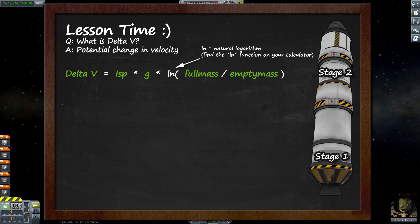Lesson time. Delta V is the potential velocity that you can gain based off the engines and the fuel that you have available to you in your stages. To calculate our delta V, we need the ISP of our engine, we need our gravity constant, and we need our full mass versus our empty mass. We need to do this for each stage.